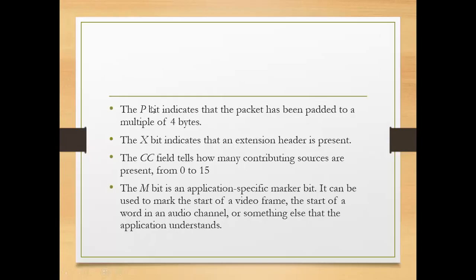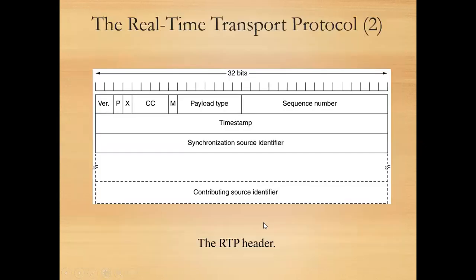Next is the M field. The M bit is an application-specific marker bit. It can be used to mark the start of a video frame, or the start of a word in an audio channel, or something else that the application understands. We use the M bit to show the start of any application-specific event.